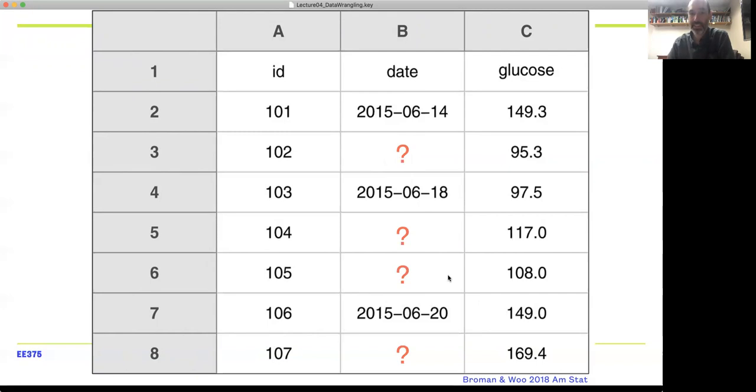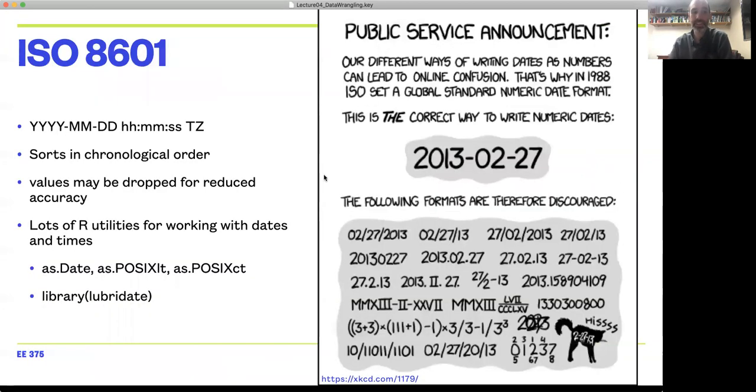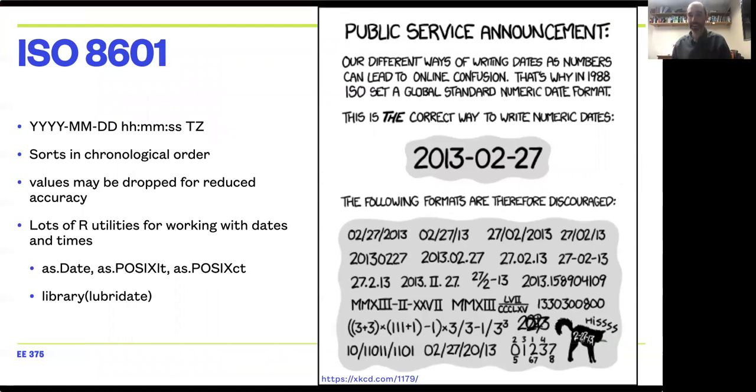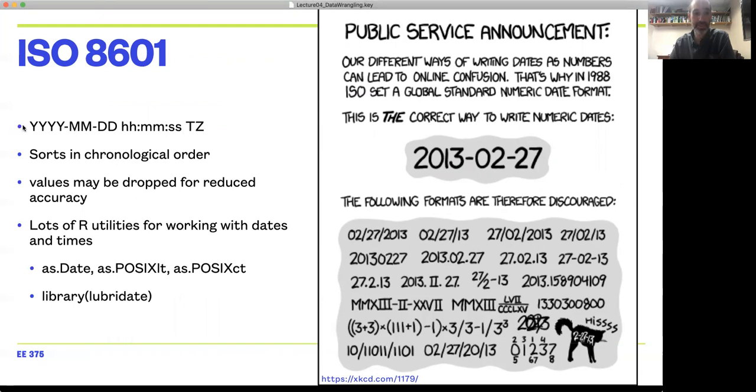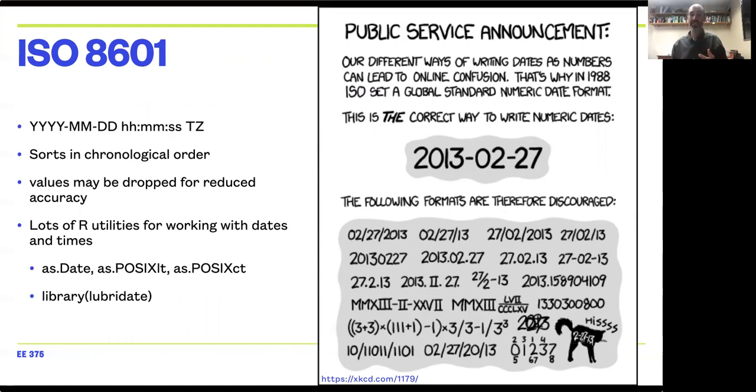I'm going to go on a slight tangent now. Since we're talking about dates, I wanted to reiterate the value of using the ISO standard date format and date-time format, where you have years, months, days, then hours, minutes, seconds, and time zone. This has a nice advantage—two key advantages—over standard US or European date conventions. One is, if you sort things, it sorts chronologically.